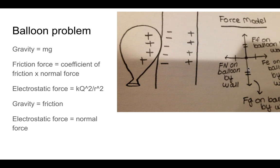Friction and gravity have to cancel each other out, because if gravity is bigger it would fall, if friction was bigger it would slide up, and that doesn't make sense. Normal force and electrostatic force also have to cancel each other out.